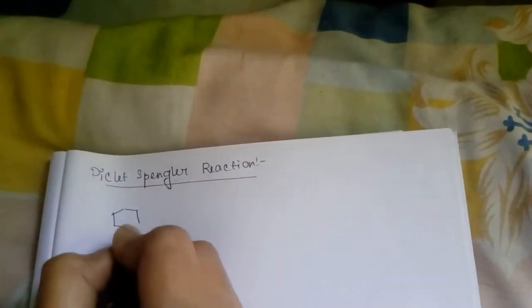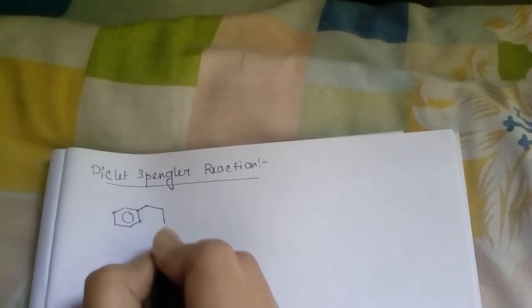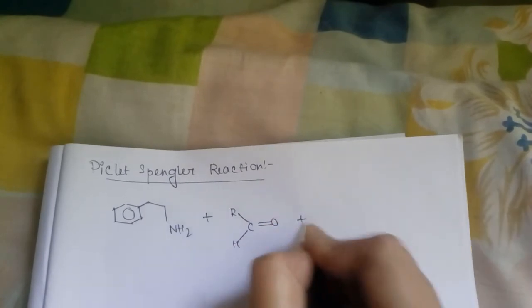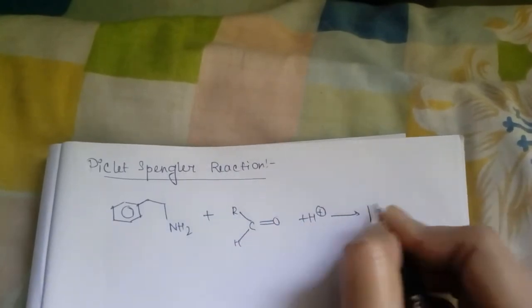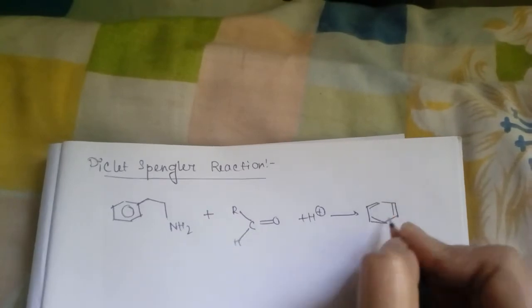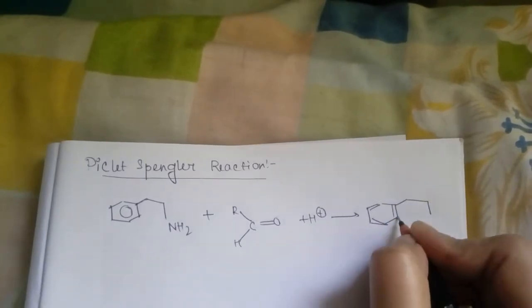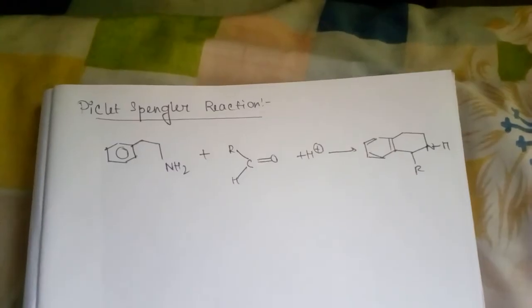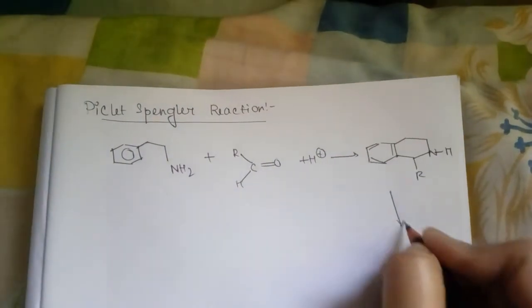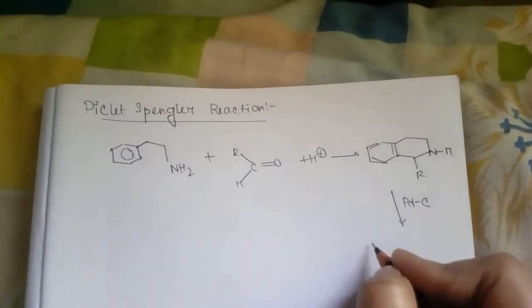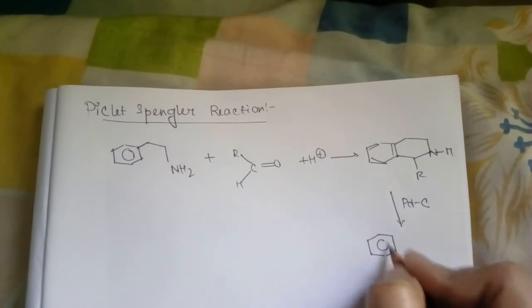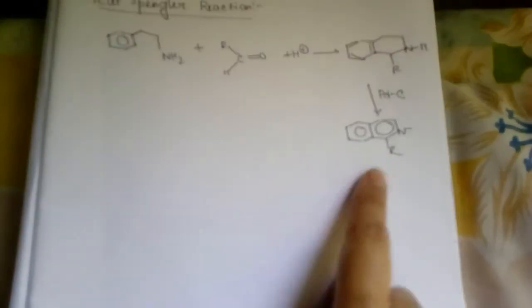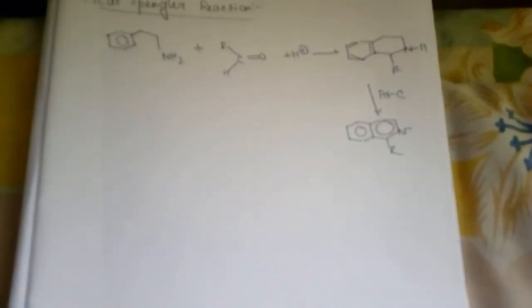The sequence is beta phenyl ethylamine plus one aldehyde plus H plus, then this will form. Then by aromatizing it with palladium carbon you will get the isoquinoline. This is the isoquinoline.